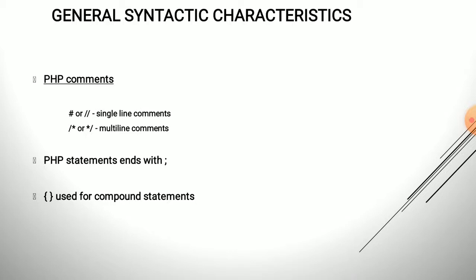Next is PHP comments. We can provide single-line comments using hash (#) or double slash (//), and we can specify multi-line comments using /* and */ — the same as in C language. Multi-line comments are the same as in C. All PHP statements end with a semicolon, and curly braces are used to form compound statements for control structures, the same as in C, C++, Java, etc.